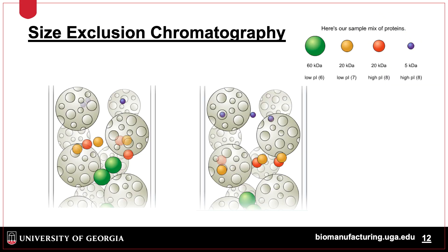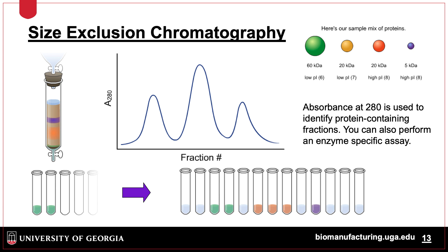One commonly used chromatography type is size exclusion chromatography. Considering four proteins entering the column at the same time, smaller proteins get trapped inside the resin, which slows down their transit through the column. The largest protein elutes first, followed by the two 20 kilodalton proteins, and the 5 kilodalton protein last. The graph shown is called a chromatogram and shows the elution pattern over time by displaying the A280 signal. Fractions collected over time allow samples to be physically separated so they can be analyzed and processed later.